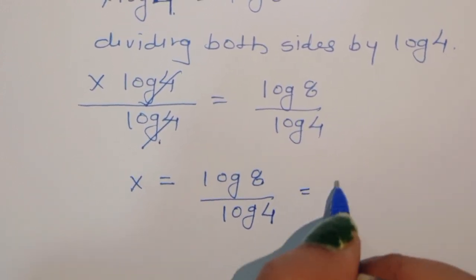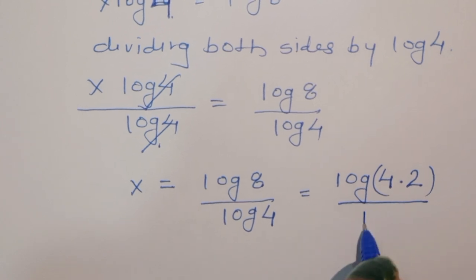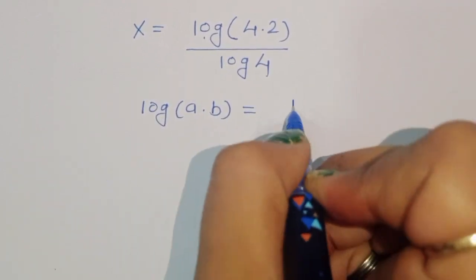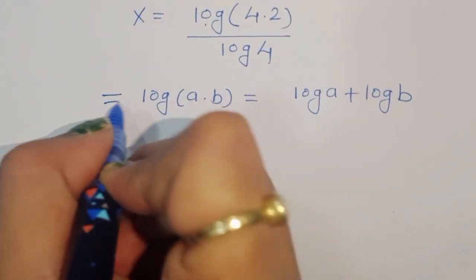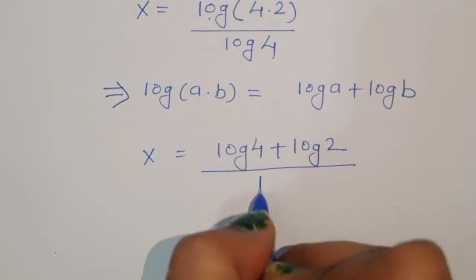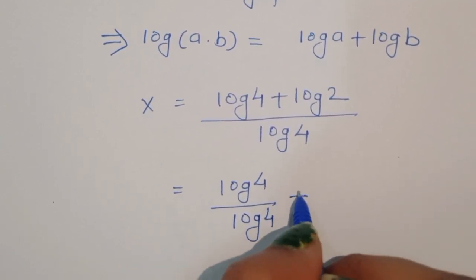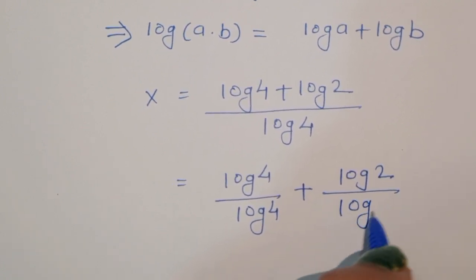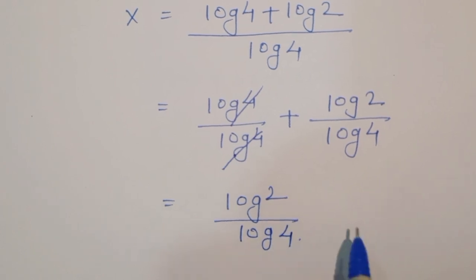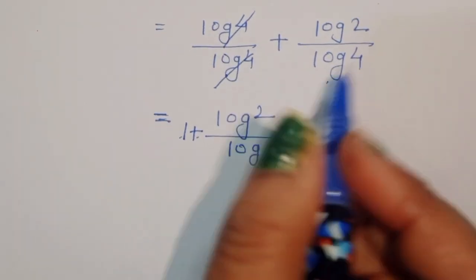Now, log of 8 can be written as log of (4 times 2). Using the formula log(a times b) equals log a plus log b, we get x is equal to (log of 4 plus log of 2) divided by log of 4. Separating the terms: log of 4 divided by log of 4, plus log of 2 divided by log of 4. The first term cancels to 1.